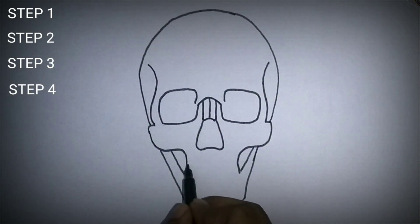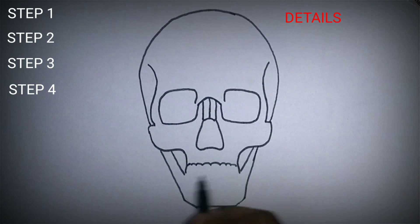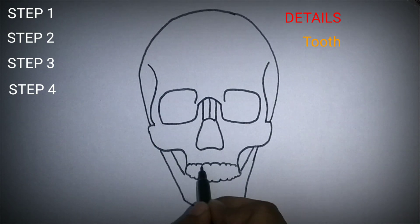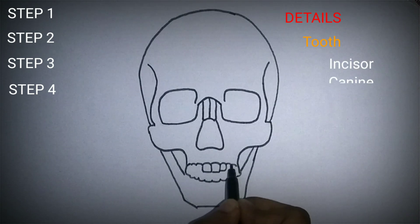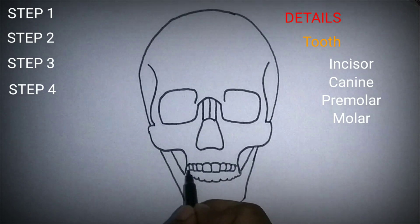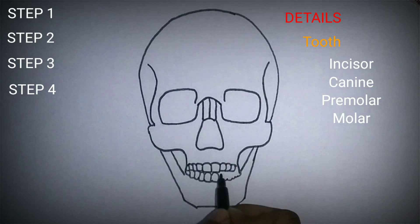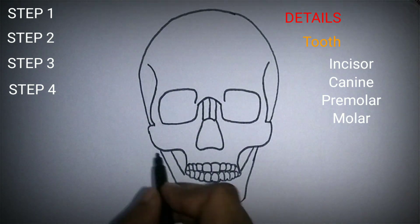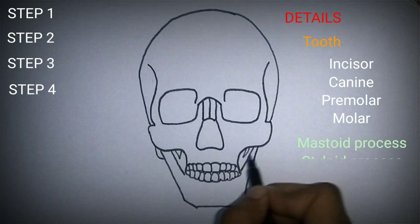In the fourth step, let us draw details to our skull. First the teeth: the incisors, canine, premolars and molars. Continue the same for the lower jaw. Then add the mastoid process and the styloid process.